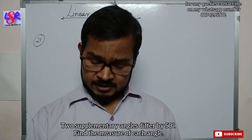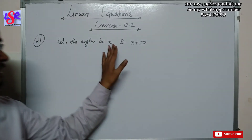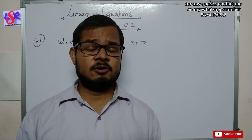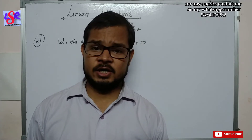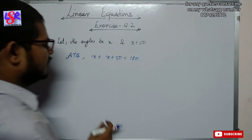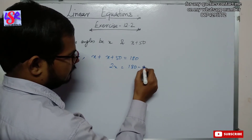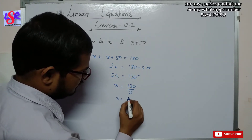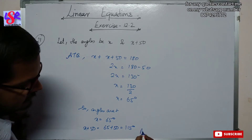Now let us move to question number 21. Two supplementary angles differ by 50 degrees. We take the angles as x and x + 50. Since supplementary angles sum to 180 degrees: x + (x + 50) = 180, so 2x = 130, giving x = 65 degrees. Therefore the angles are 65 degrees and 115 degrees.